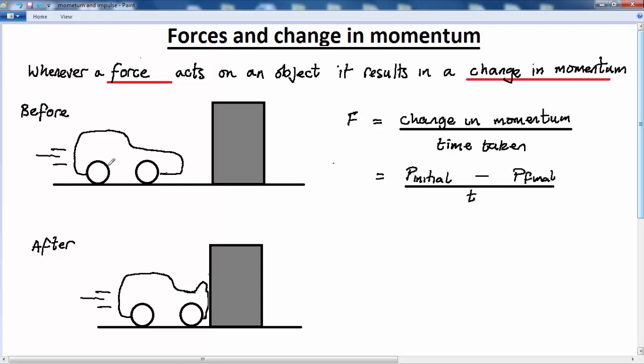So let's put some figures to this situation to make some sense of this relationship. We'll say that the car has a mass of 600 kilograms. It's quite a lightweight car. And it's traveling with a velocity of 20 meters per second. So we can say that its initial momentum is 600 times 20.